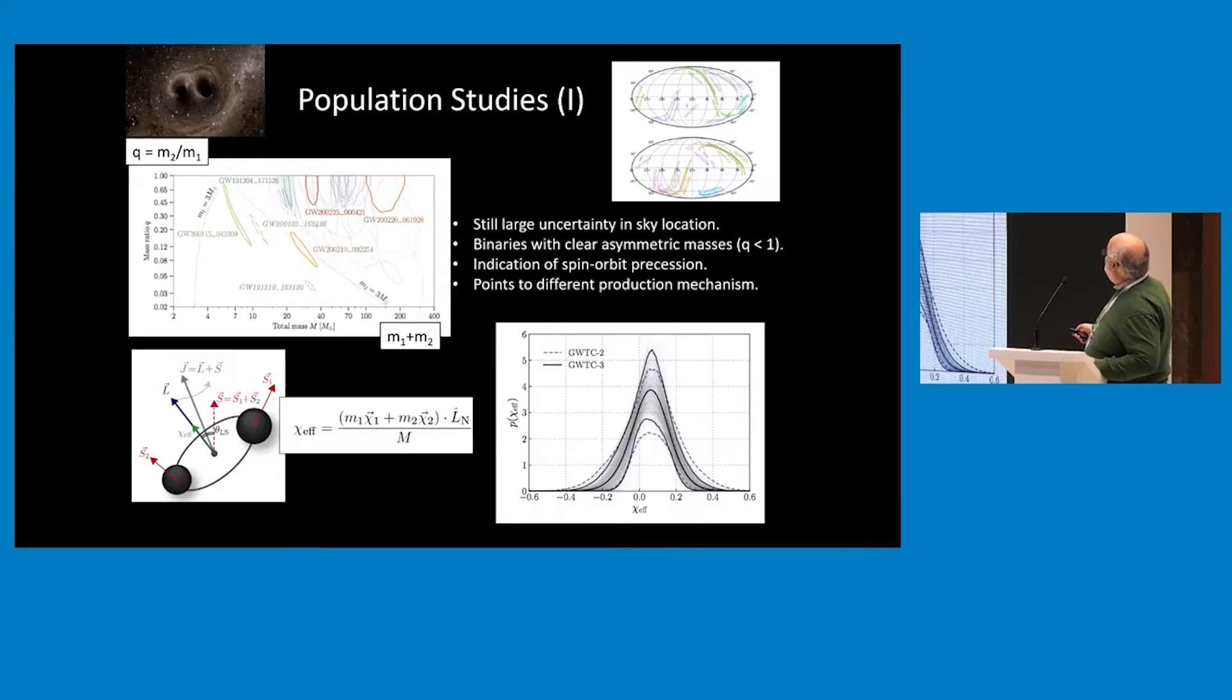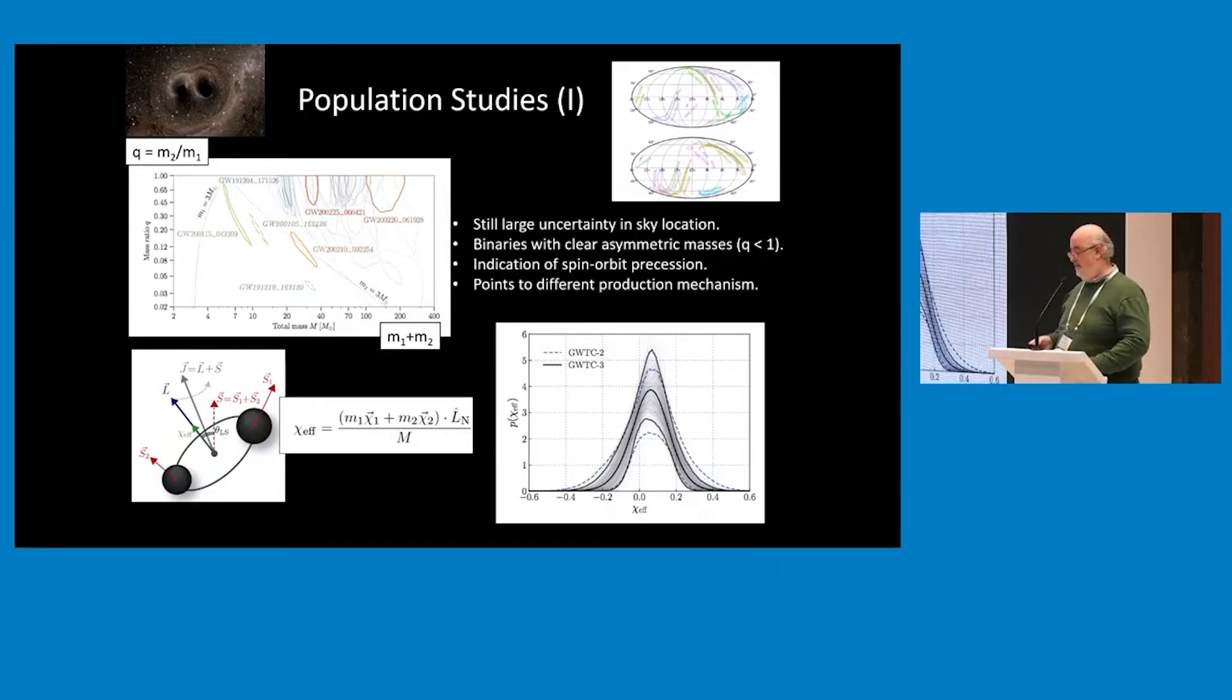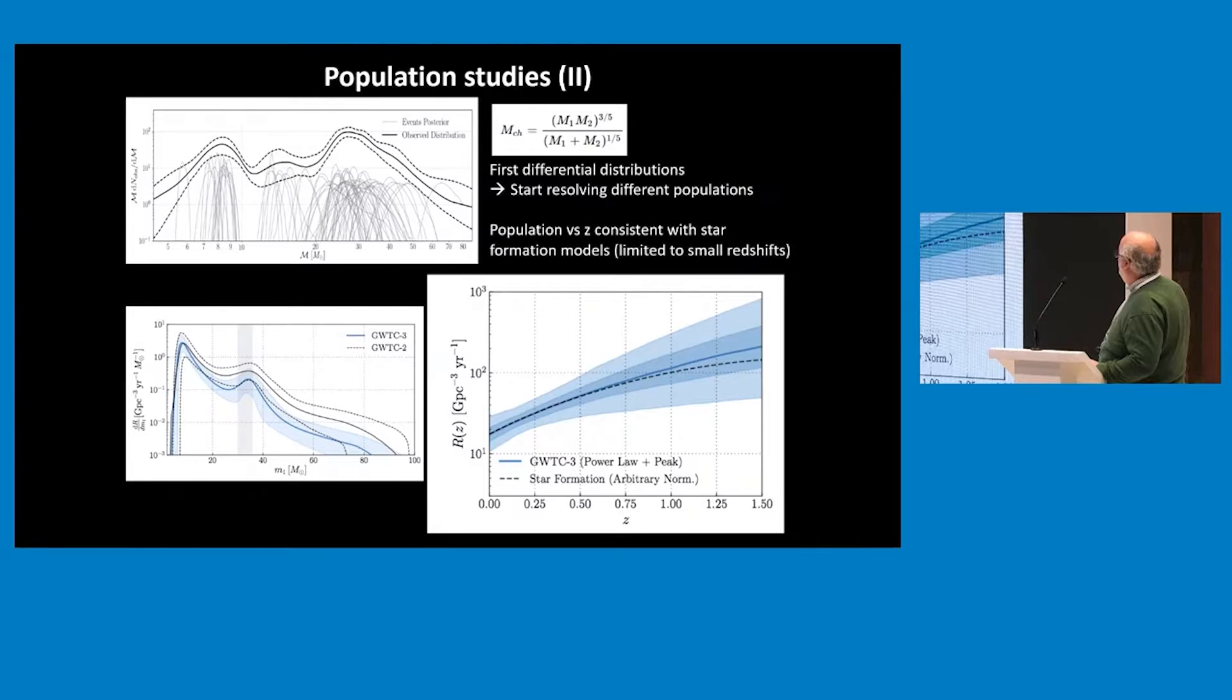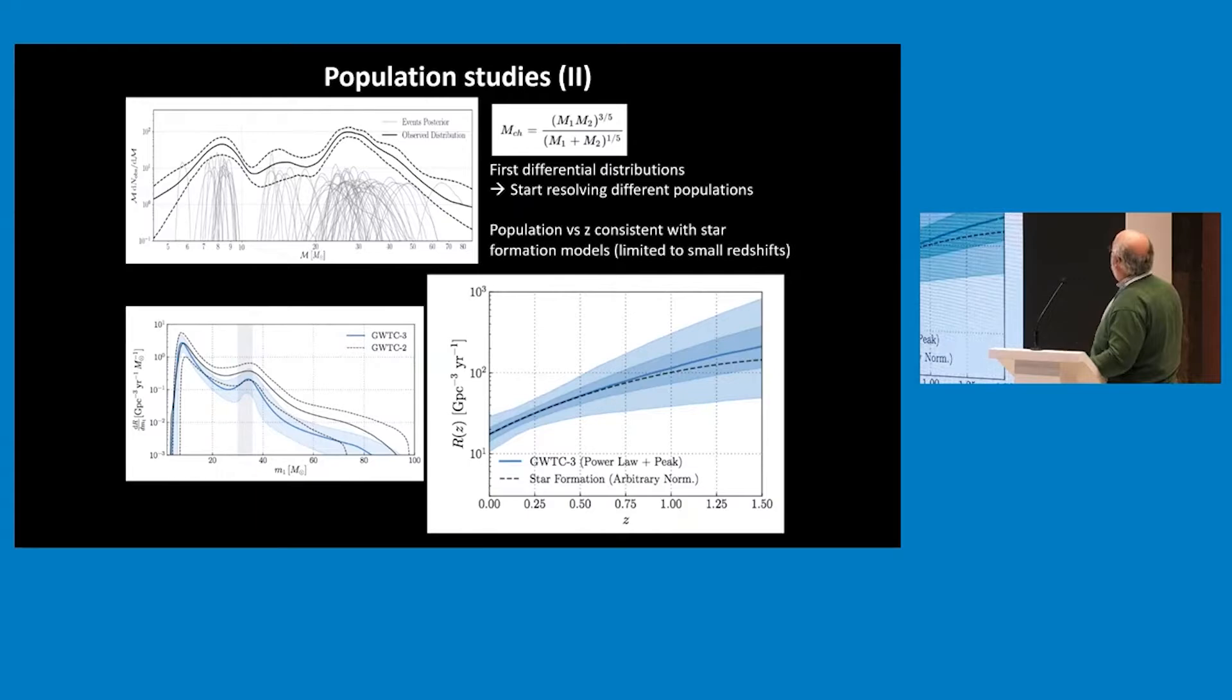I will not go through all the science, but just to tell you that once you start having a hundred events, you start looking at how the population looks like in the sky, in different masses, in spins, how they rotate, how they are oriented. That allows you to understand better the populations. You start seeing different populations of events coming from different populations. One thing I want to show is the rate of mergers versus redshift. We increase with redshift as we expect because we increase the volume, and follow what we expect from stellar formation and evolution going to black holes.